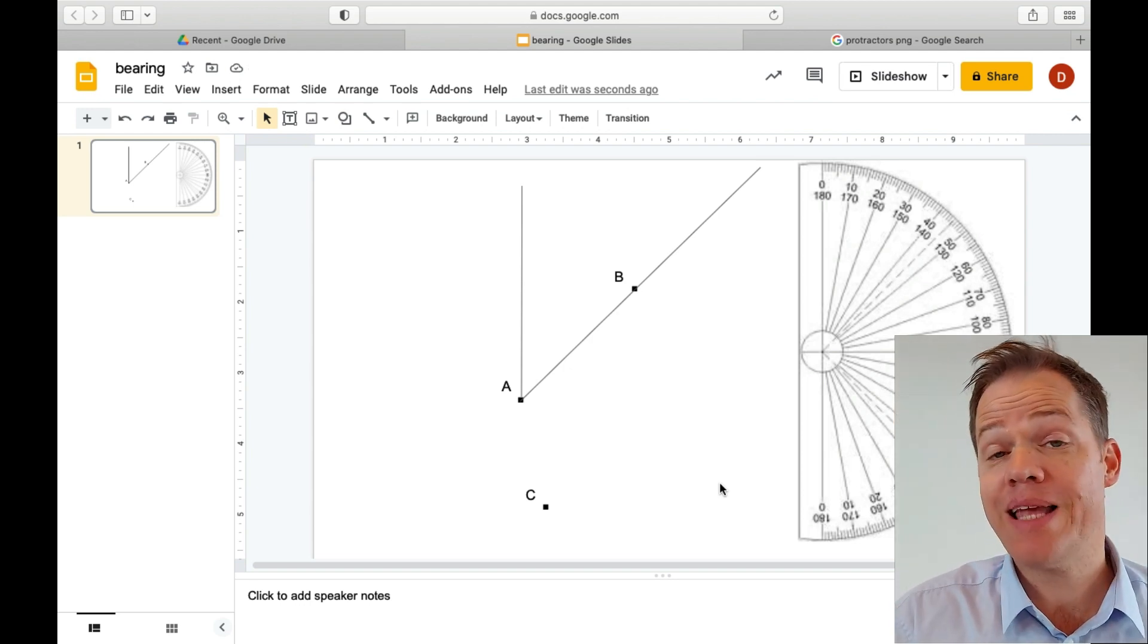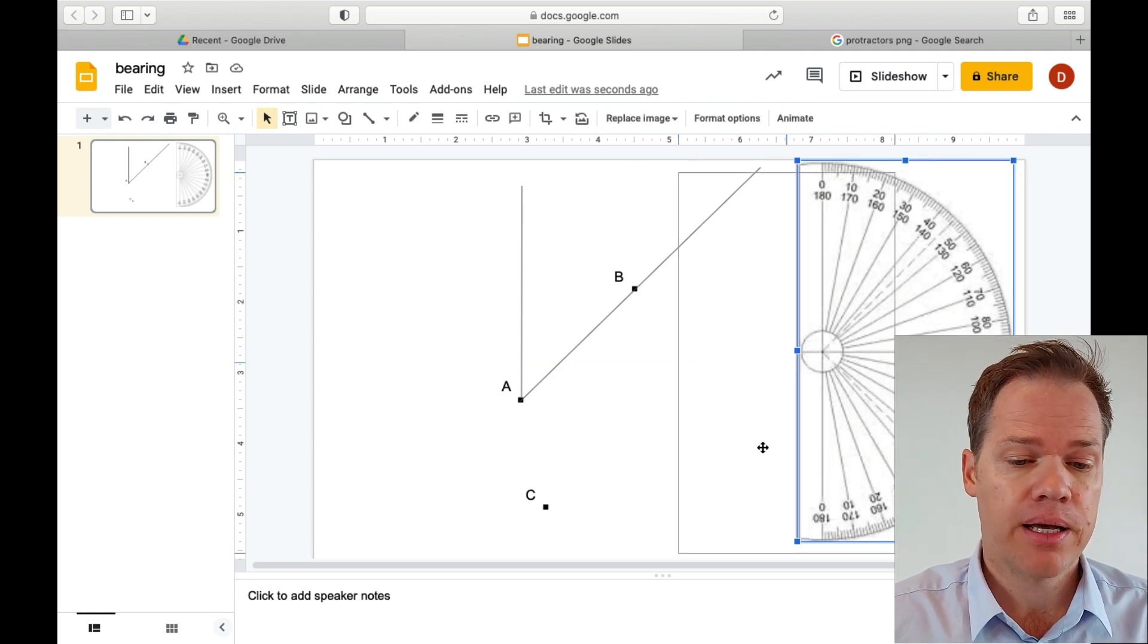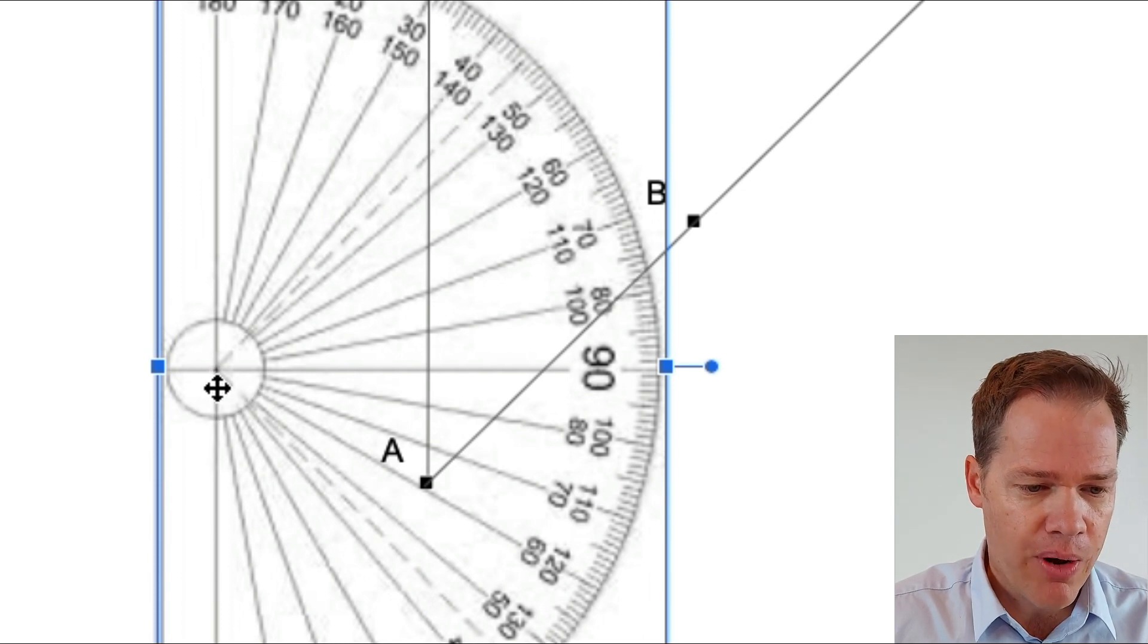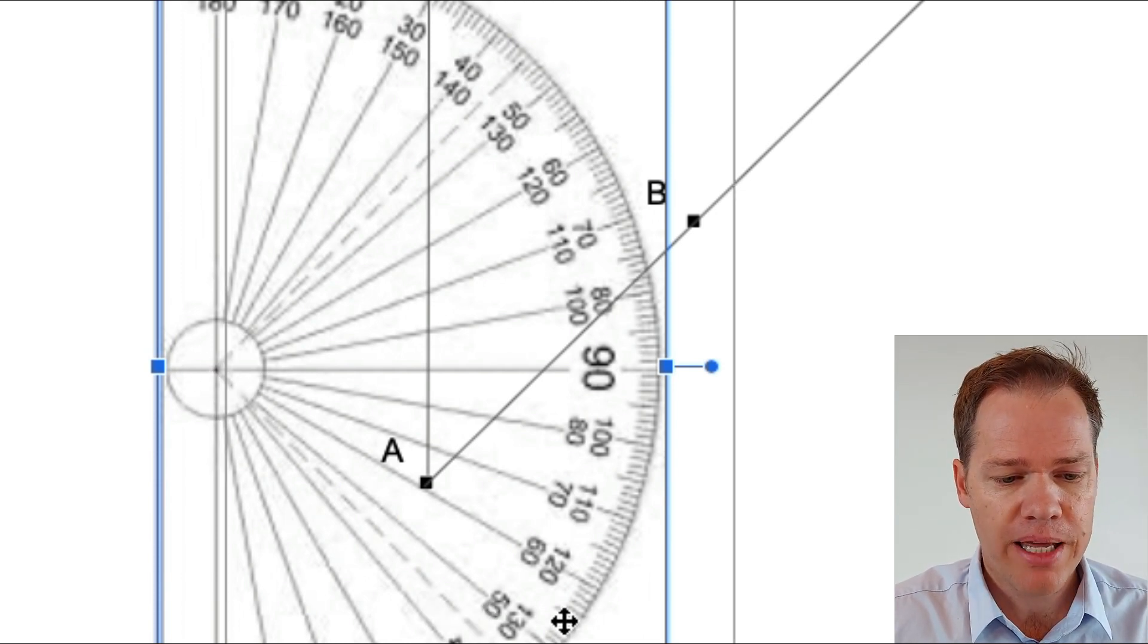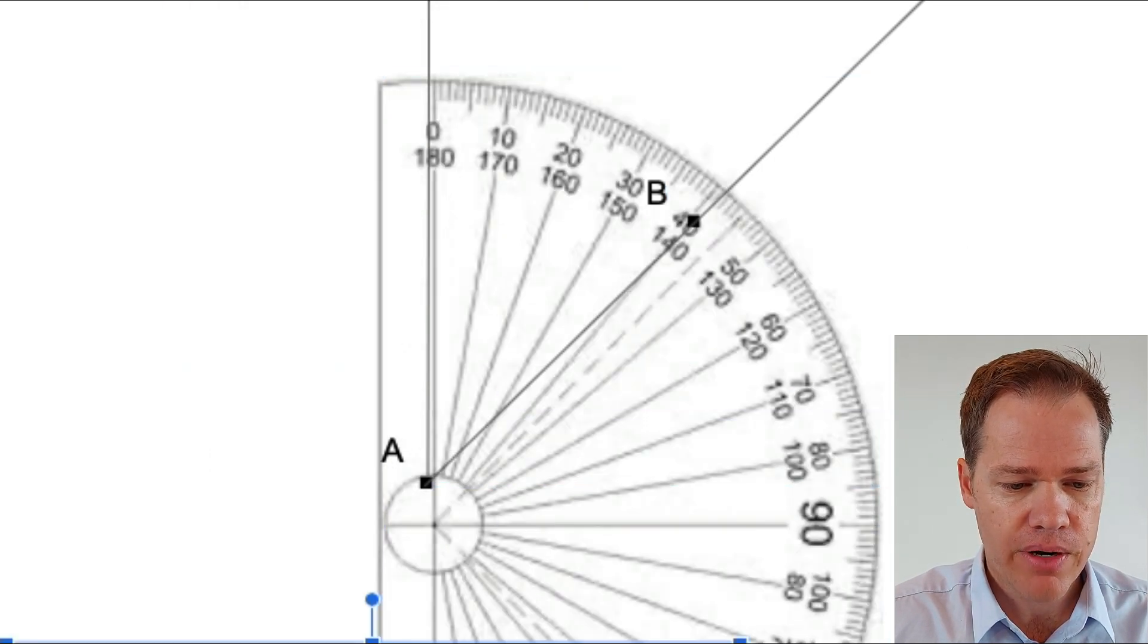Then we need to place the protractor properly. If we don't place it properly, we can't get to the right answer. So that point there, where all those lines intersect, that is where you're going to place the protractor exactly on point A. Very important.